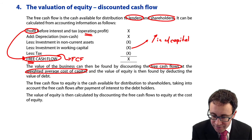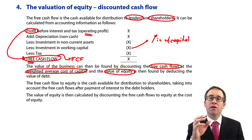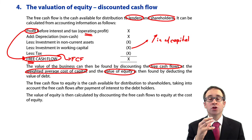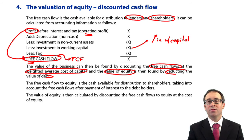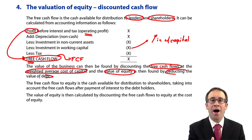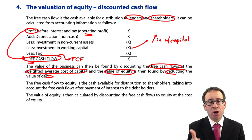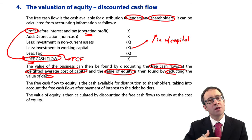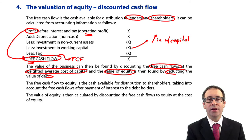We're trying to value the equity, so we don't want to include the value of the debt. Therefore, from the value of the business, we subtract the value of the debt, which gives us the value of equity. Be very careful: discounting free cash flows at the WACC gives the value of the business — i.e., the value of equity plus the value of debt. To get the value of equity, deduct the value of the debt.